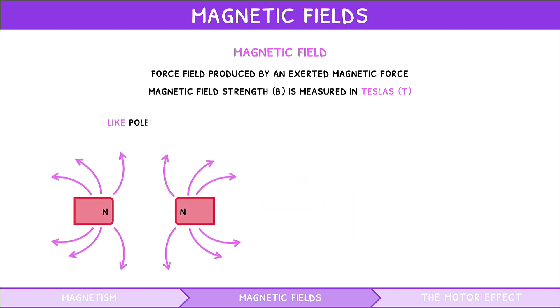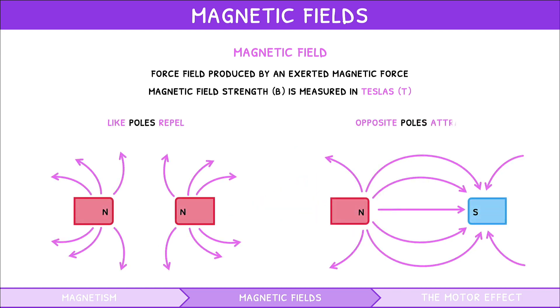two like poles repel and two opposite poles attract, each with possible magnetic fields shown below.